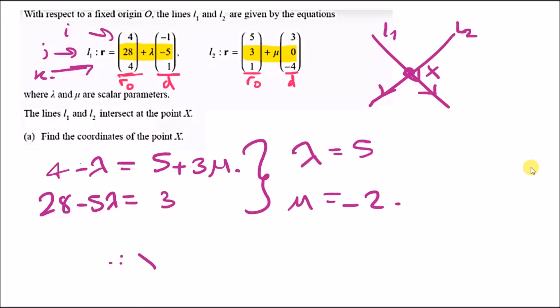Therefore, X equals - I'm taking the second equation - 5 plus 3 mu, 3, and 1 minus 4 mu. At the point of mu at minus 2, this gives us the position vector of minus 1, 3, and 9.